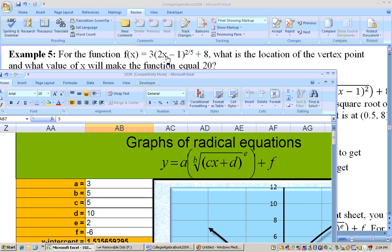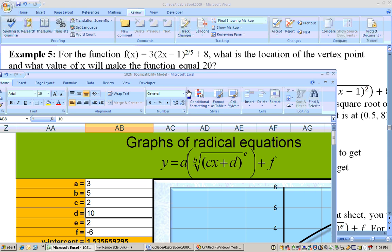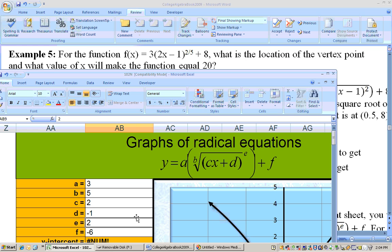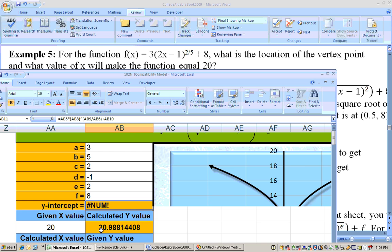And the c is 2, the d is minus 1, and the e is the power that it's 2. Well, that's the power, you know, not the root, but the numerator here, 2. So that's 2, and then the f is 8 right here, so that's 8.